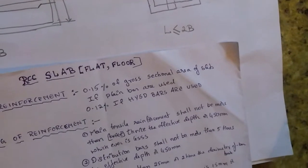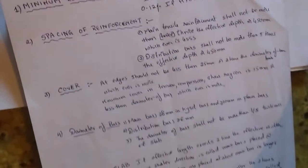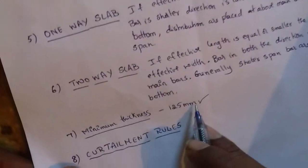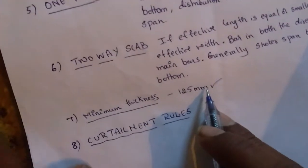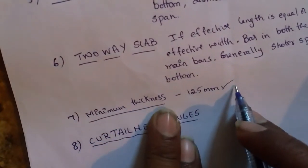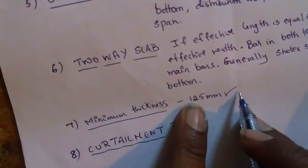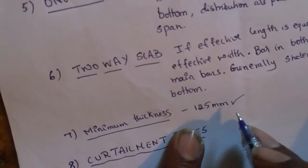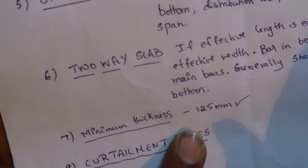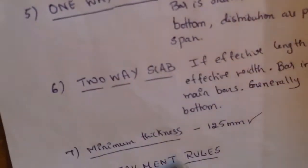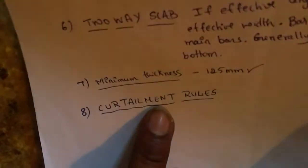The minimum thickness of a slab is 125 mm. There are many design criteria for it, but the minimum thickness should be more than 125 mm. Now let's look at the curtailment rules — you have to see one diagram for it.